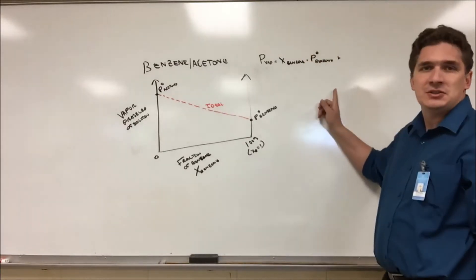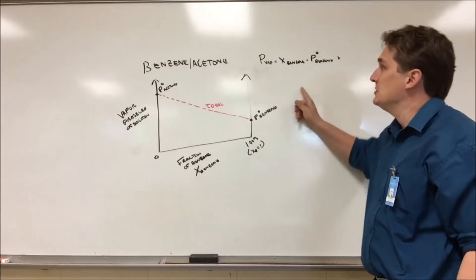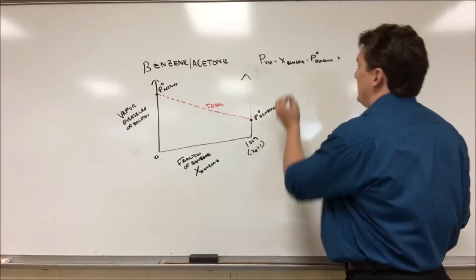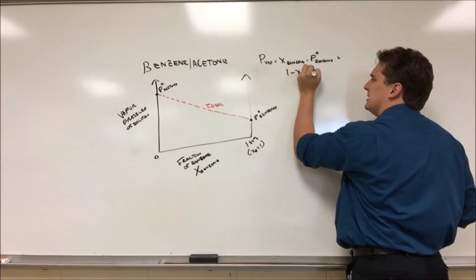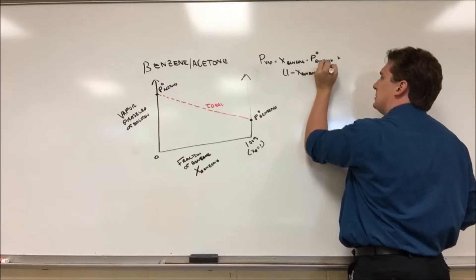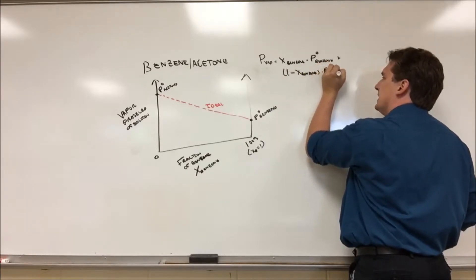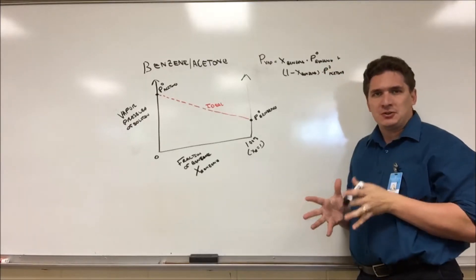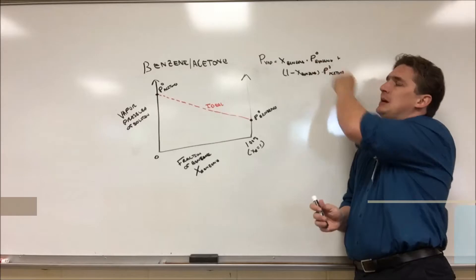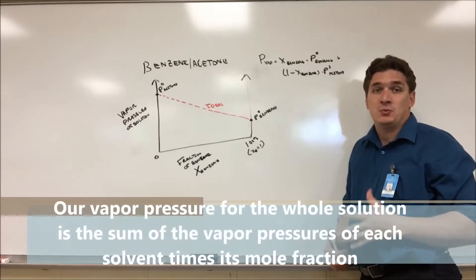Plus however much of the solution is acetone. So this is going to be one minus the mole fraction of benzene, this is for a binary solution, times the vapor pressure of acetone. So basically our vapor pressure, our total pressure of solution, is just a linear combination of the individual vapor pressures weighted by how much of it we have in solution.